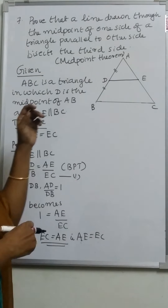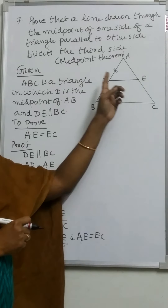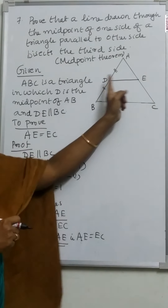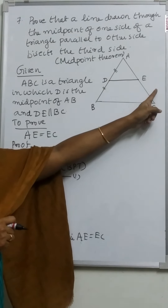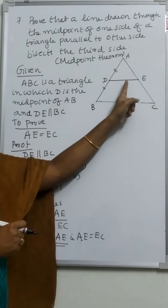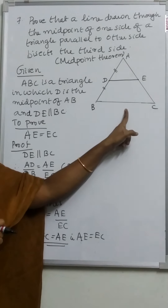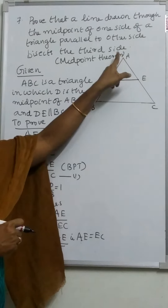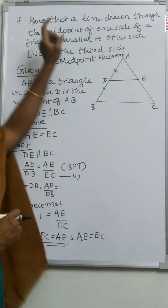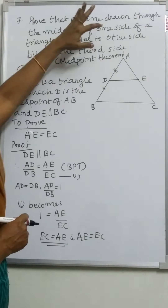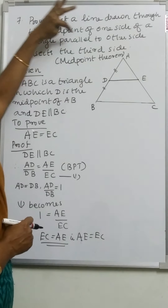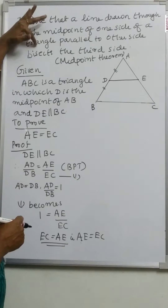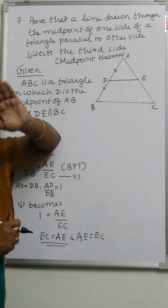If a line is drawn through the midpoint of one side of a triangle and is parallel to another side, then it bisects the third side. We have to prove that E is the midpoint of AC, that is, AE is equal to EC.